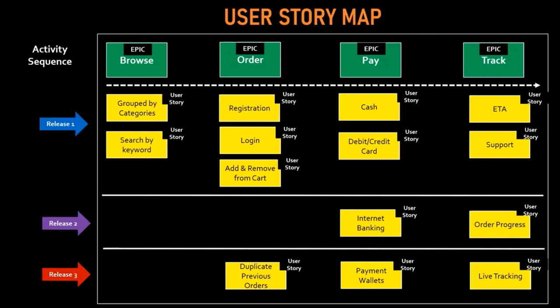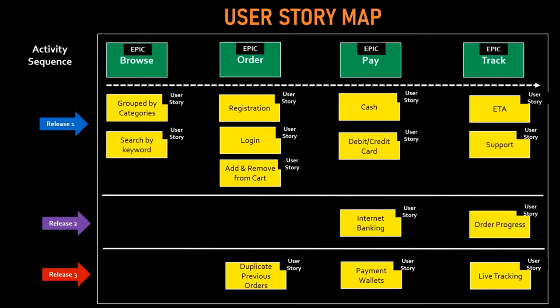If you're not familiar, this is how the user story map looks. It has a series of epics with an activity sequence from left to right — the steps the user would take to achieve the objective. They'll be able to browse the available foods, order via the application, pay for it online, and then track it until they receive it. Below those activities are the user stories, grouped into releases: release one, two, and three — highest value first, then subsequent releases.